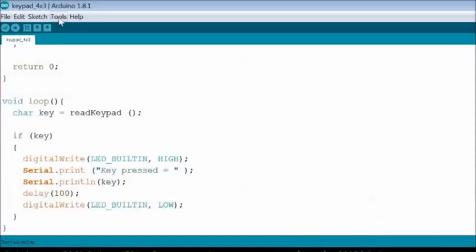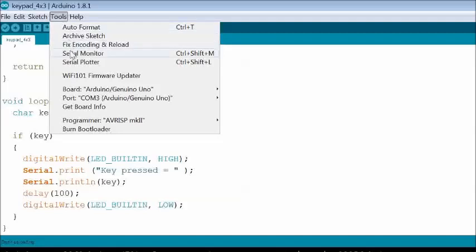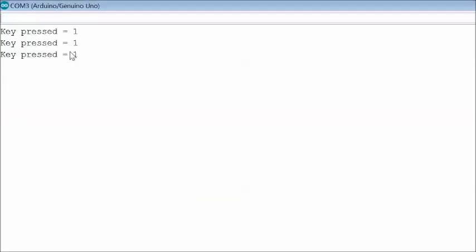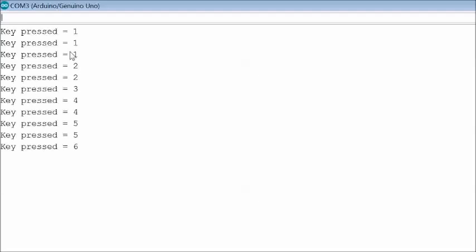If you select serial monitor from tools menu, the status of serial output is visible. You may observe sometimes more than one row output for each key press, which is not desirable.